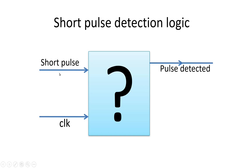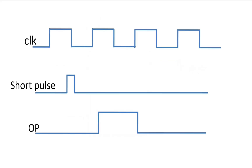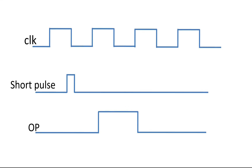As soon as this short pulse is detected by the unknown module, it should give its output high for one clock cycle. Let us name this output signal as 'pulse detected.' To clarify this problem statement, I have drawn timing diagrams. These are the two inputs — clock and short pulse input — and this is the output named 'short pulse detected.' The short pulse is asynchronous and quite short relative to the clock period. As soon as it is detected, the output should go high for one clock cycle, as shown in the figure.